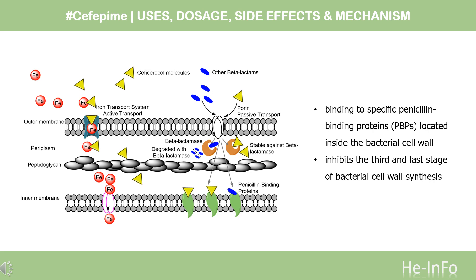Cefepime has a broad spectrum of in vitro activity that includes both gram-positive and gram-negative bacteria. Cefepime has affinity for PBP-3 and PBP-1 in Escherichia coli and Pseudomonas aeruginosa, as well as PBP-2 in E. coli and Enterobacter cloacae.